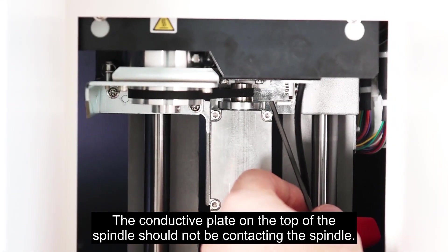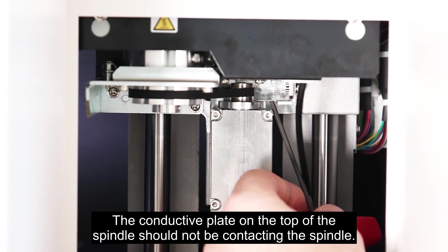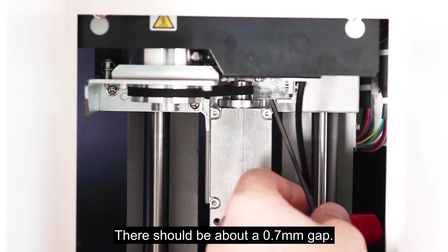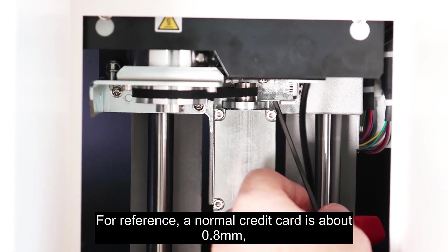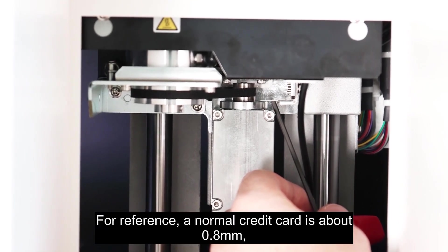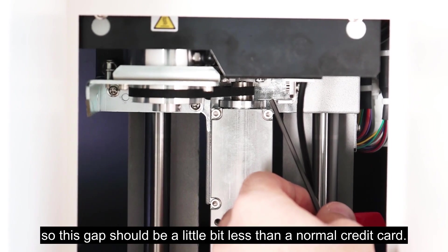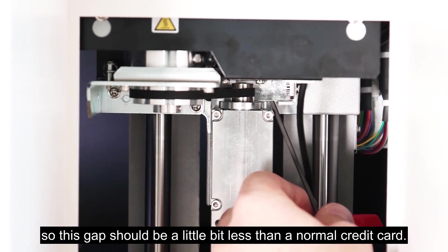The conductive plate on the top of the spindle should not be contacting the spindle. There should be about a 0.7 millimeter gap. For reference, a normal credit card is about 0.8 millimeters, so this gap should be a little bit less than a normal credit card.